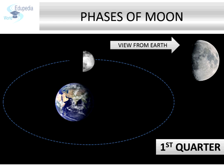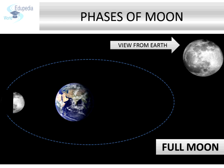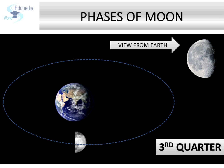On the other hand, when the moon is on the other side, we are able to see the full illuminated part of the moon. This is known as the full moon. After this, as the moon gradually moves ahead, we begin to see lesser and lesser of its illuminated part. This is known as waning of the moon — it means that the moon is shrinking.